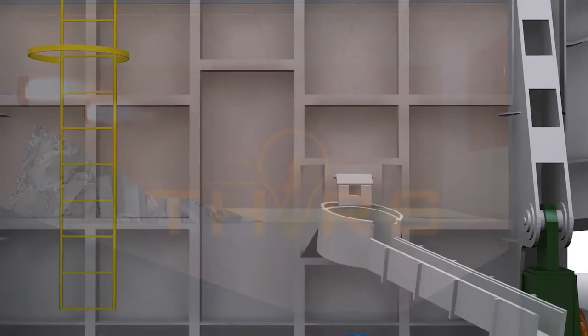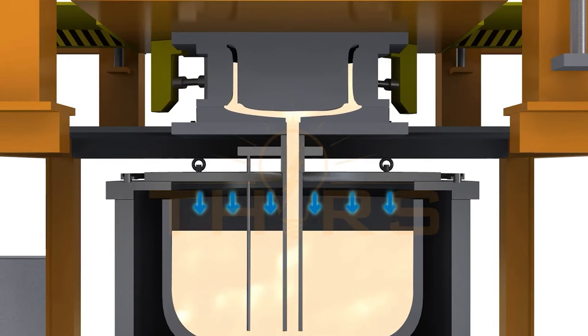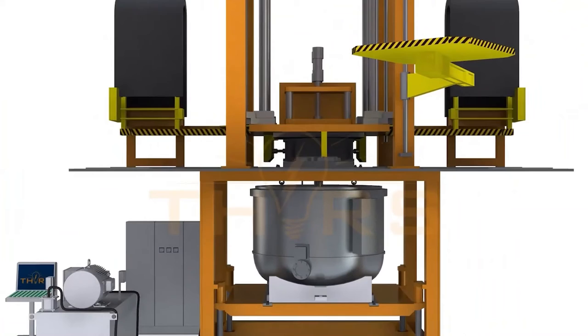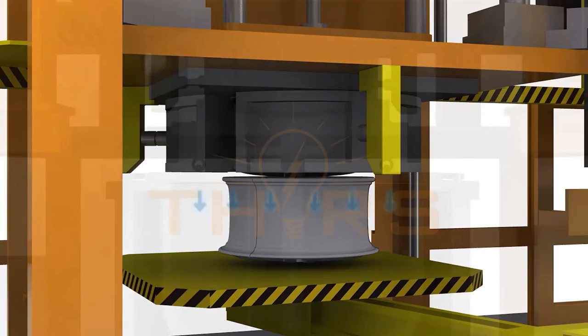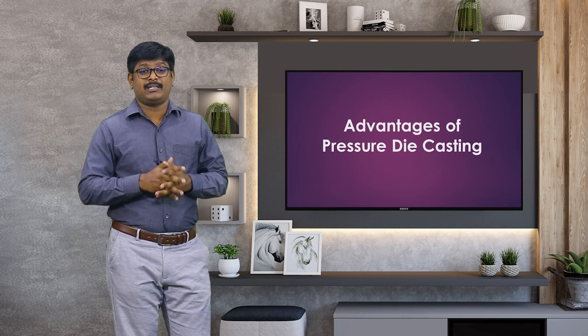The process works as follows: a metal die is positioned above a sealed furnace containing molten metal. A refractory-lined riser extends from the bottom of the die into the molten metal. Low pressure air is introduced into the furnace, causing the molten metal to rise up the tube and enter the die cavity with low turbulence. After solidification, the air pressure is released, allowing metal still in molten state in the riser tube to fall back into the furnace. After subsequent cooling, the die is opened and the casting is extracted.